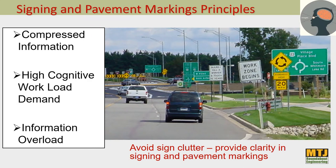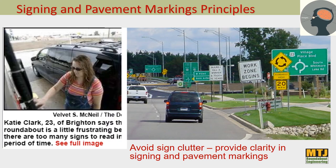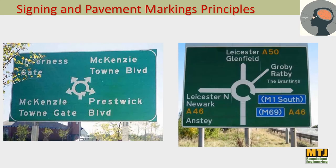Our multi-lane roundabouts are often getting over-signed — lots of sign clutter, compressed information, high cognitive workload, information overload. Here's an example of a UK-style advanced directional sign versus a North American one from Canada. They're both green and white, they're both big, they both have a lot of information — but which one reads better? The one on the right. Why? Different colors, different sizes — I can easily see what's the major road and what's the minor road.